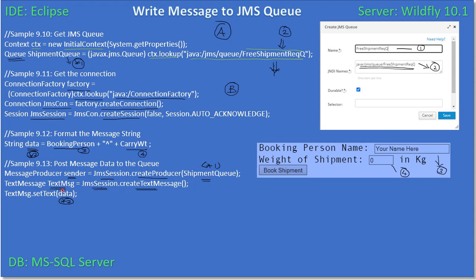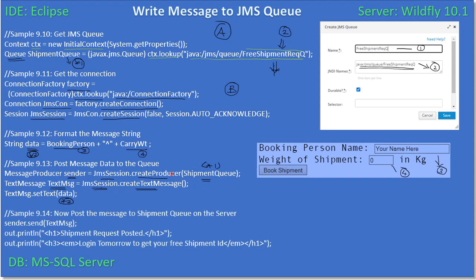So now we have two moving parts: the message producer which will send the object, and the text message constructed from the form field data. We call sender.send(textMessage) — where textMessage is booking person concatenated with carry weight using the caret symbol. After sending, control immediately returns to the next statement without waiting, so we write a response to the output stream right away.